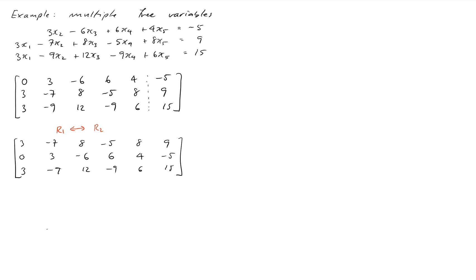Now we're going to use that pivot entry to clear anything underneath it. So that will be the row operation row 3 becomes row 3 minus row 1. Okay, so the first two rows are going to be left the same. Subtracting row 1 from row 3, so that will be a 0. Negative 9 plus 7 will be negative 2. 12 minus 8 is 4. Negative 9 plus 5 is negative 4. 6 minus 8 is negative 2. And 15 minus 9 is 6.